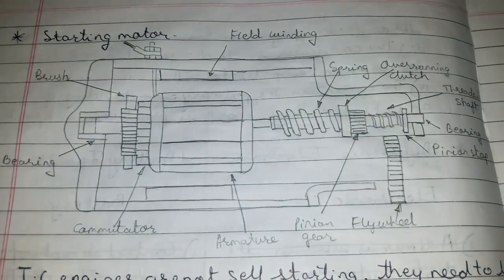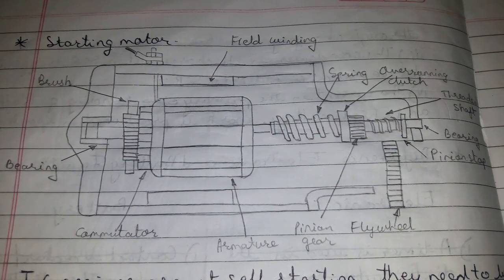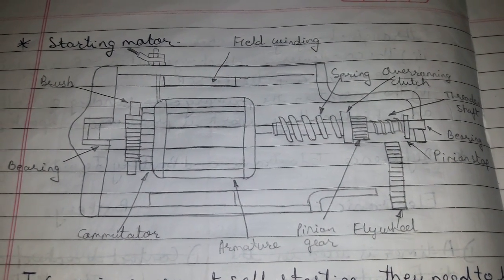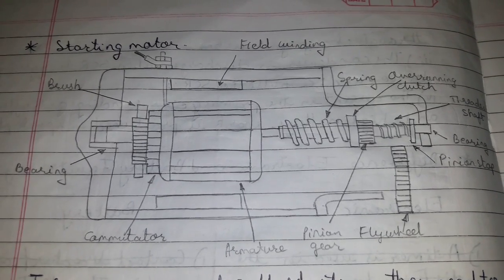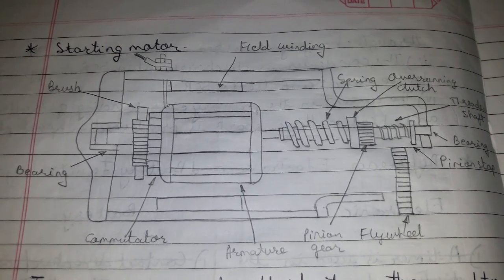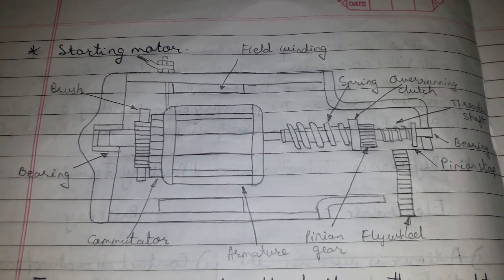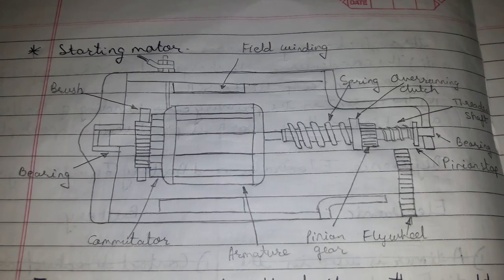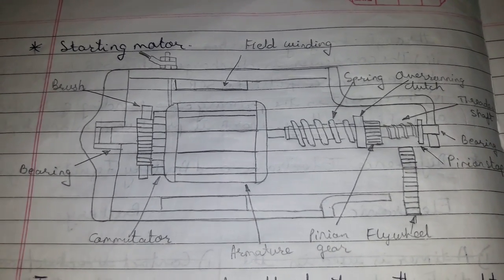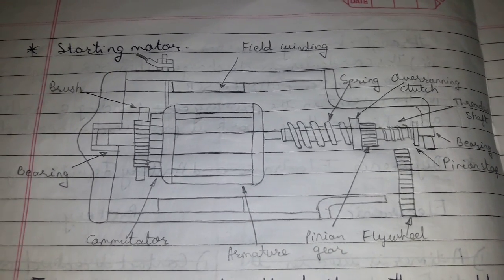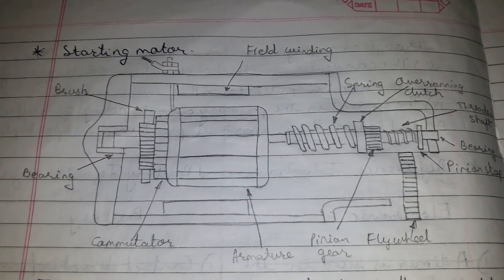Today's topic of discussion is the starting motor. IC engines are not self-starting; they need to be rotated for a few cycles by an external device known as a starting or cranking motor. The starting motor is a direct current motor which operates on large current at low voltage.